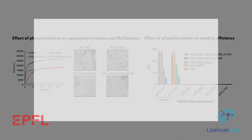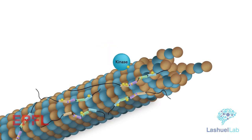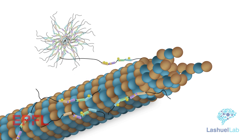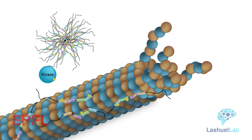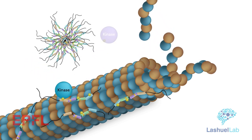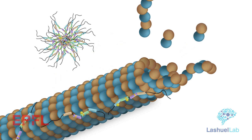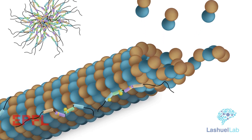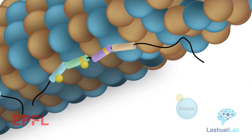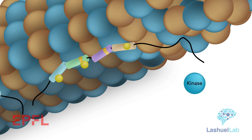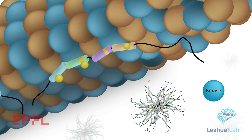This stands in contrast to the prevailing hypothesis that hyperphosphorylation necessarily leads to tau fibrilization. The team's work suggests that some hyperphosphorylation patterns may occur after tau fibrilization or as a cellular response to aggregation. It also underscores the critical importance of revisiting the role of phosphorylation in regulating tau's normal functions and its role in the pathogenesis of the disease.